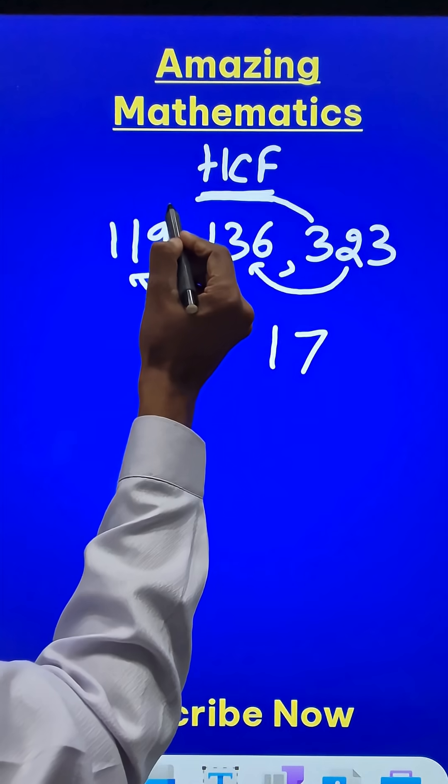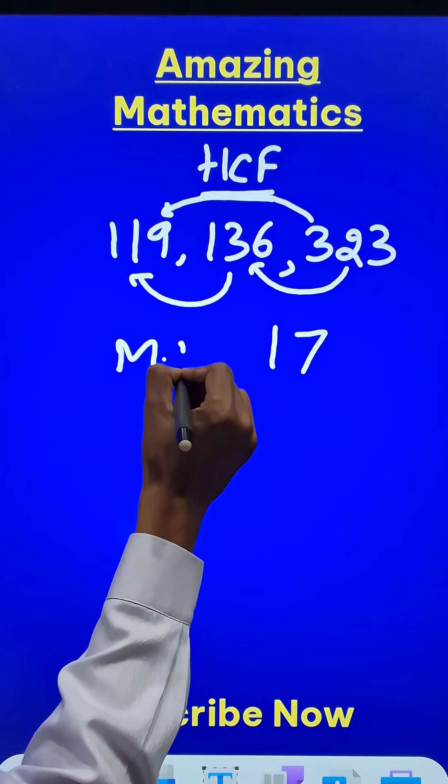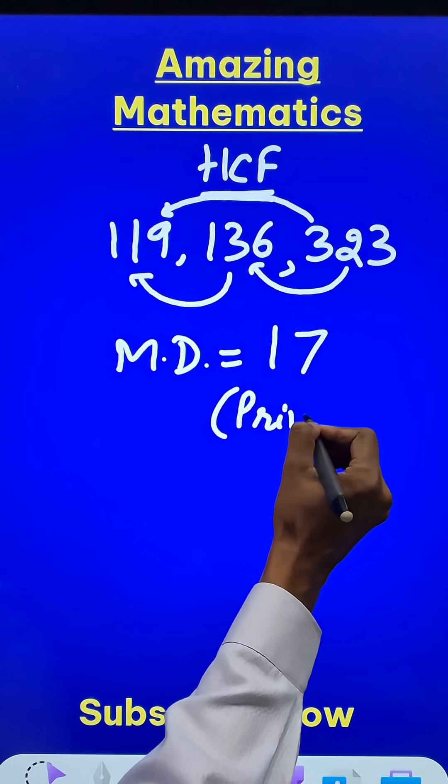The difference between these two is obviously even more than 17, so I wanted the minimum difference between the three numbers and that comes out to be 17. And 17 happens to be a prime number.